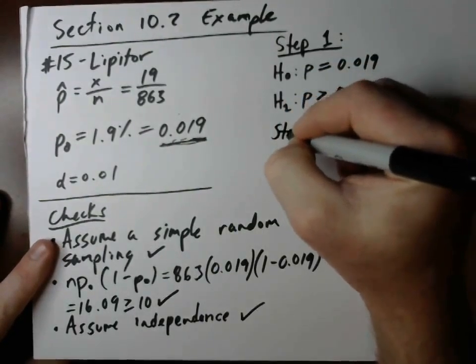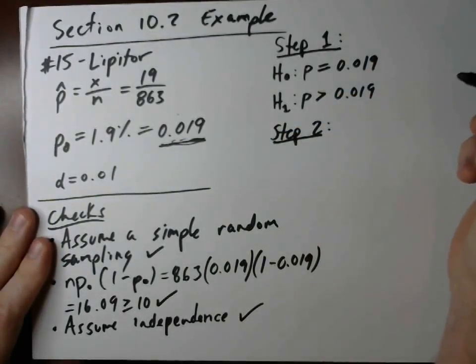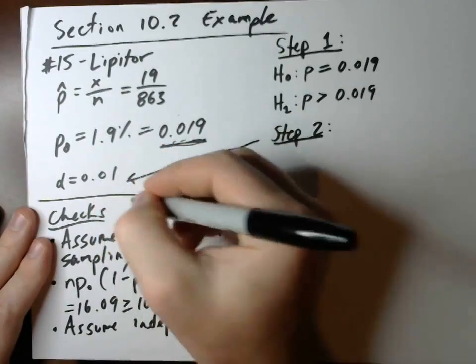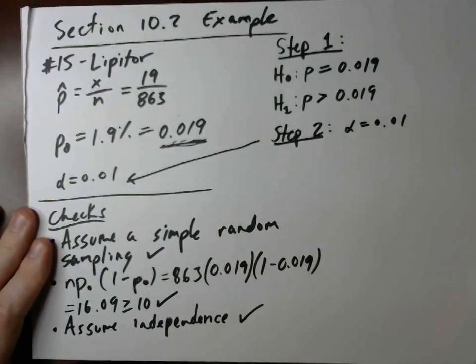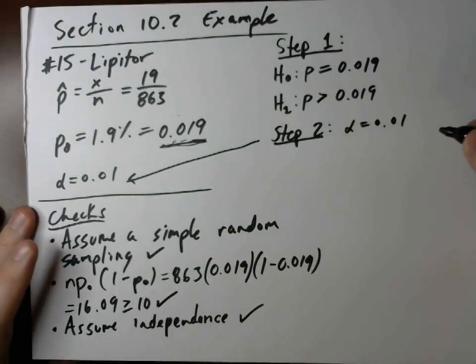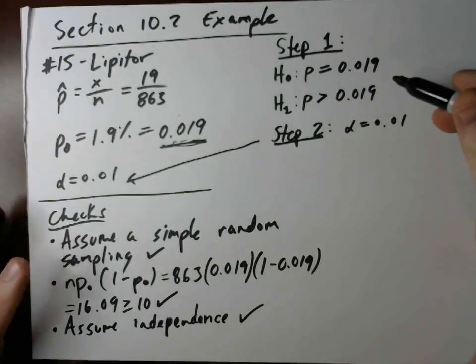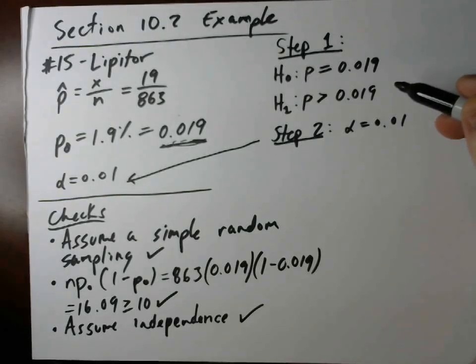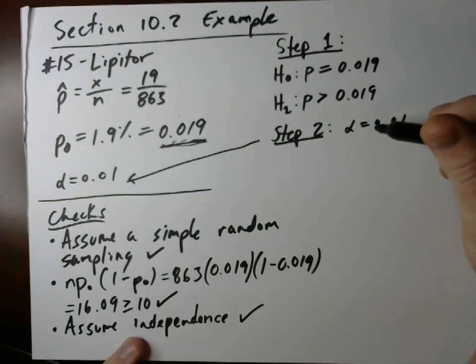So now step two. That was step one. Step two is our level of significance. Right there. There's our level of significance. Alpha equals 0.01. So what we're saying here is that we're going to be testing the claim to see if there's evidence to conclude that it's more than 1.9%. But how picky are we? How picky are we going to be doing this hypothesis testing?